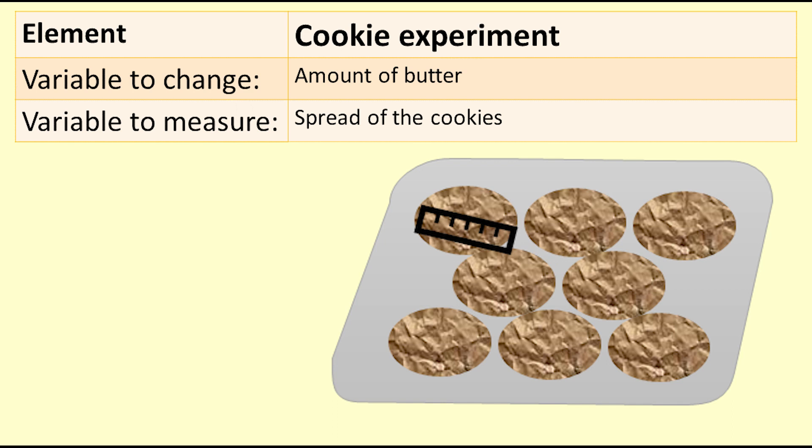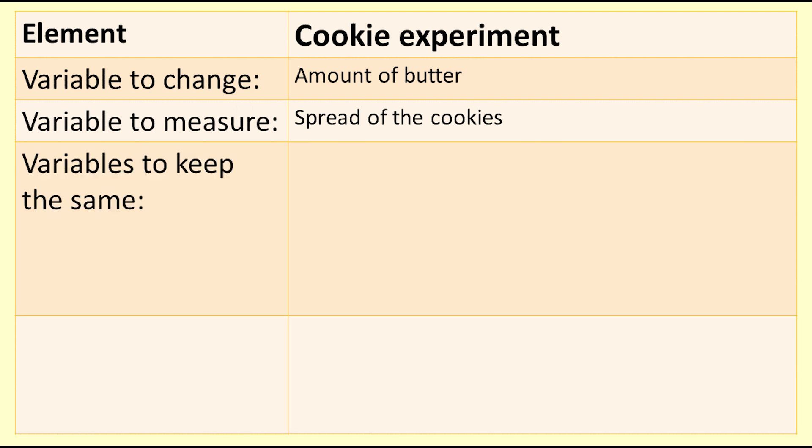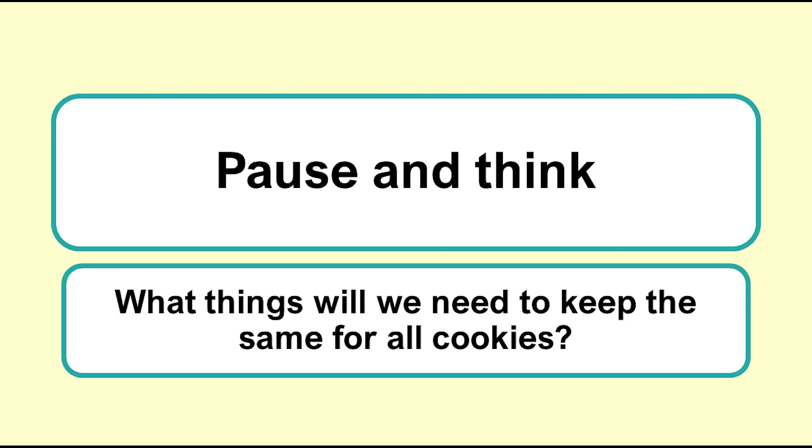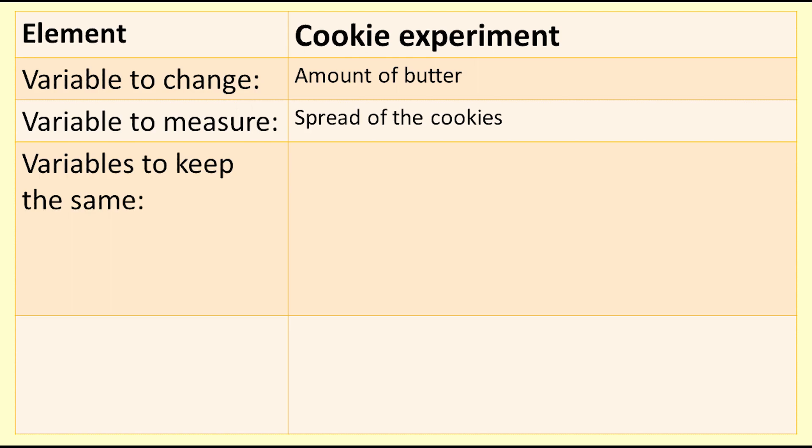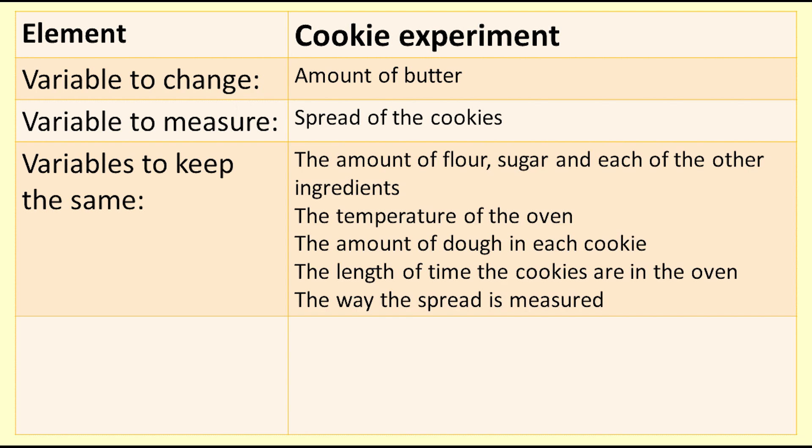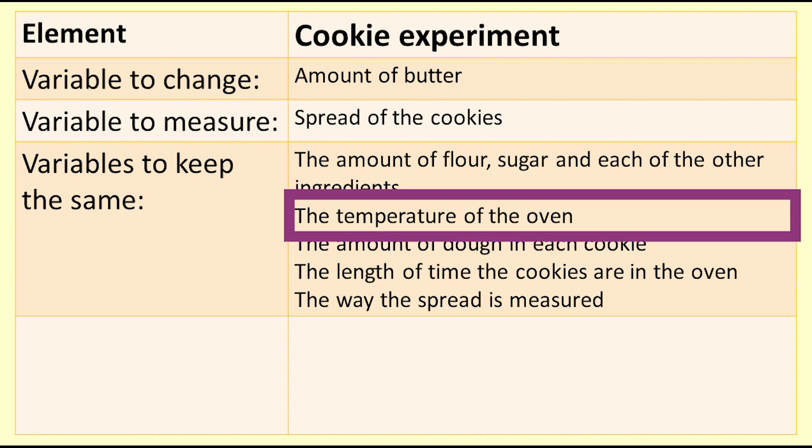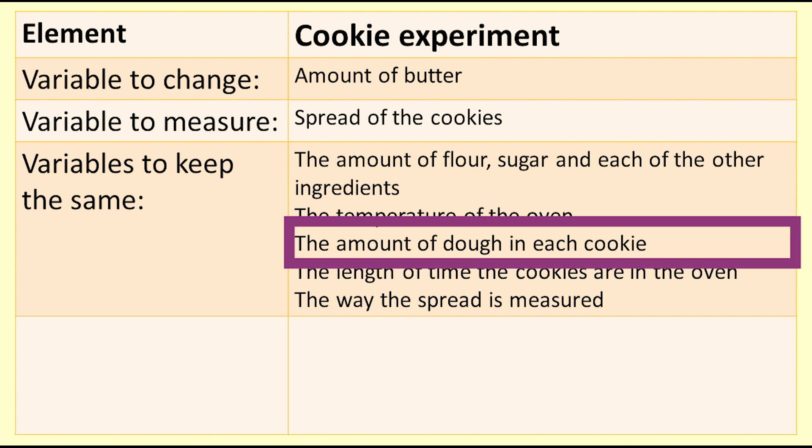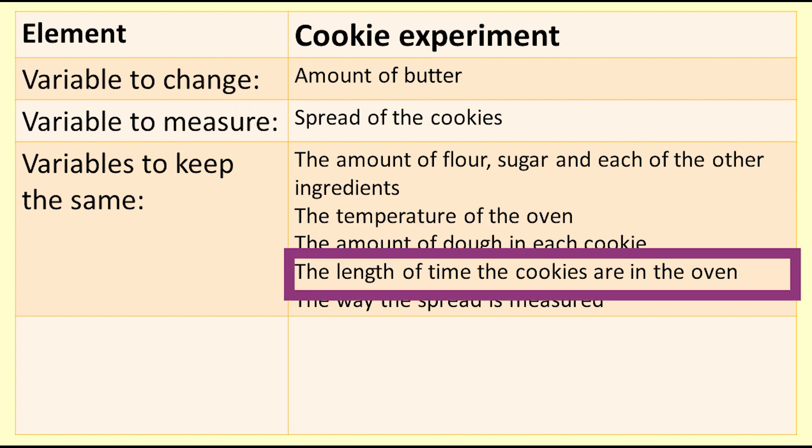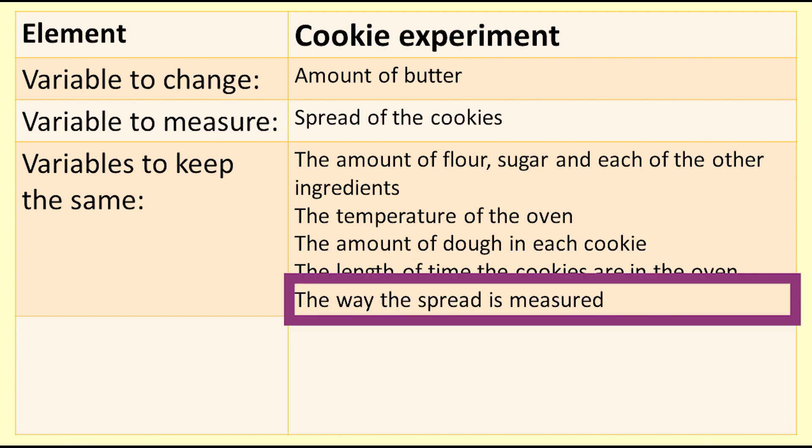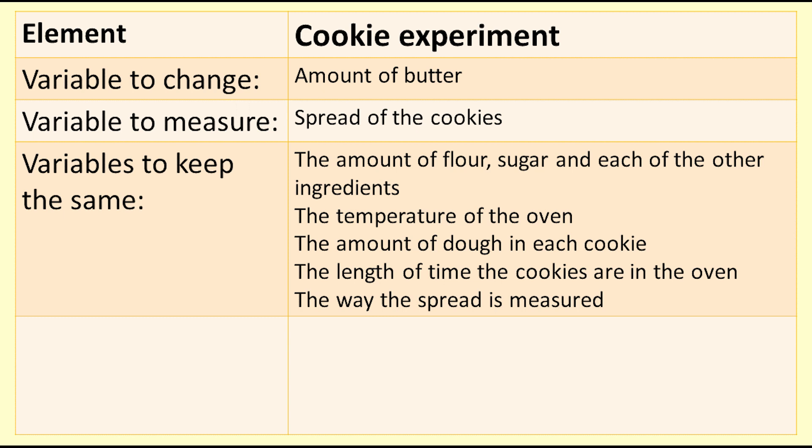When we perform the experiment we need to make sure that nothing changes except for the aspect or variable of interest. Pause the video and think about what things we will need to keep the same for all of the cookies. Here is a list of some variables to keep the same: the amount of flour, sugar and each of the other ingredients, the temperature of the oven, the amount of dough in each cookie, the length of time the cookies are in the oven, and the way the spread is measured. These are all things that we should be able to keep the same or control.